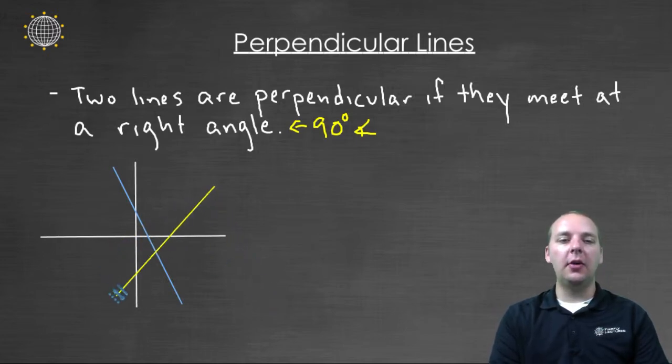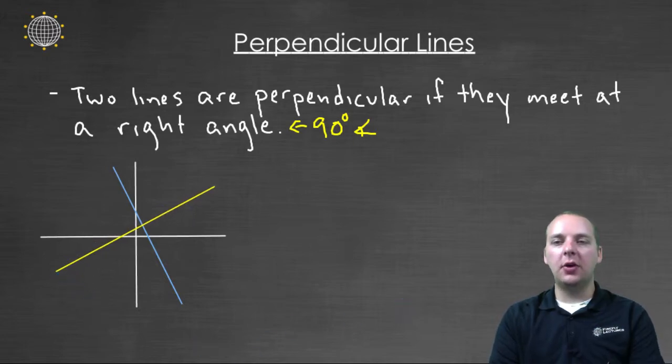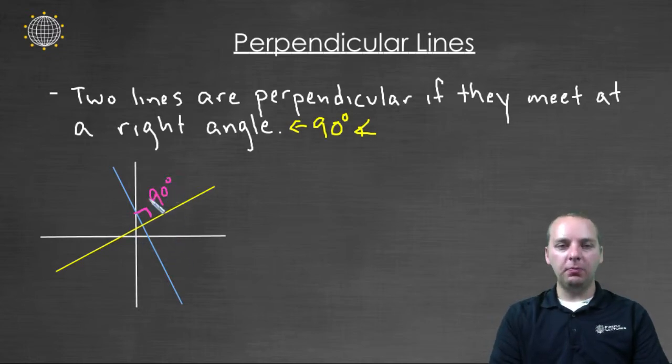But perpendicular means not only do they cross, like this line, or this line, or this line, but they actually cross in such a way that it makes a ninety degree angle exactly with the other line. So to me that looks like maybe somewhere right about here. And you'll notice right here where these guys cross, it's going to make a right angle. It's going to make a ninety degree angle. Alright, so that's what perpendicular means.